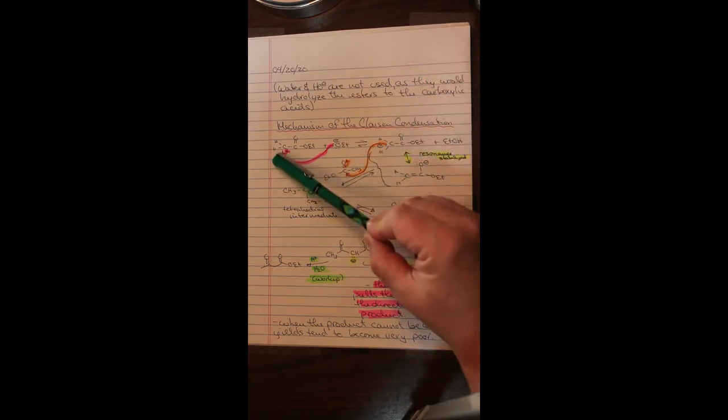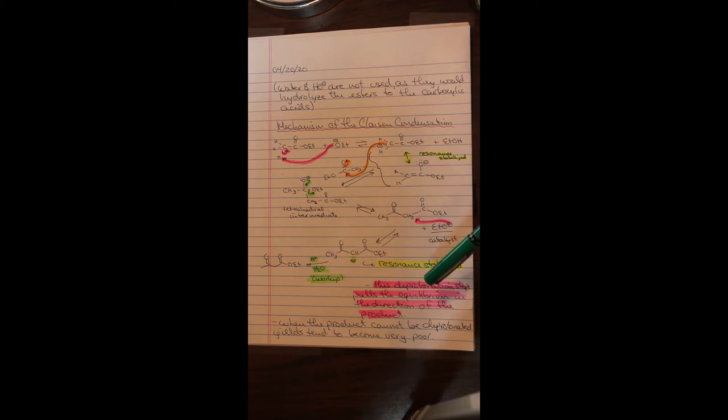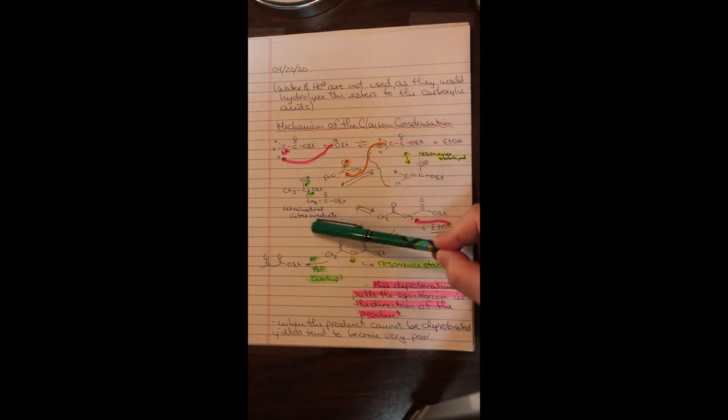Showing here now is the mechanism of the Claisen condensation. Ethoxide generates the enolate by pulling off the alpha proton. This enolate is, of course, resonance stabilized. Hopefully, you're getting sick of hearing that. You just now assume this. This enolate can now nucleophilically attack another ester. It does this. It generates the tetrahedral intermediate shown here.